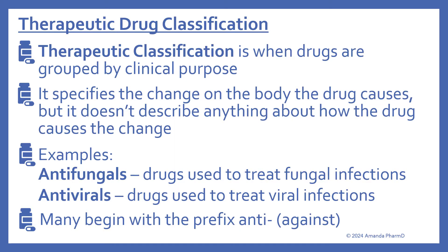So first we'll look closely at therapeutic drug classification. Therapeutic classification is when drugs are grouped by clinical purpose. It specifies the change on the body the drug causes, but it doesn't describe anything about how the drug causes that change. For example, antifungals are drugs used to treat fungal infections, and antivirals are drugs used to treat viral infections. Many of these therapeutic drug classifications begin with the prefix anti, which means against.